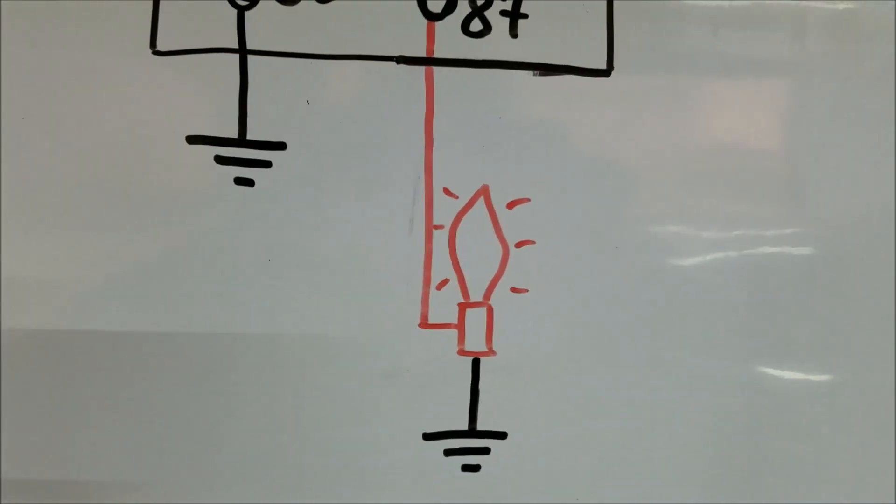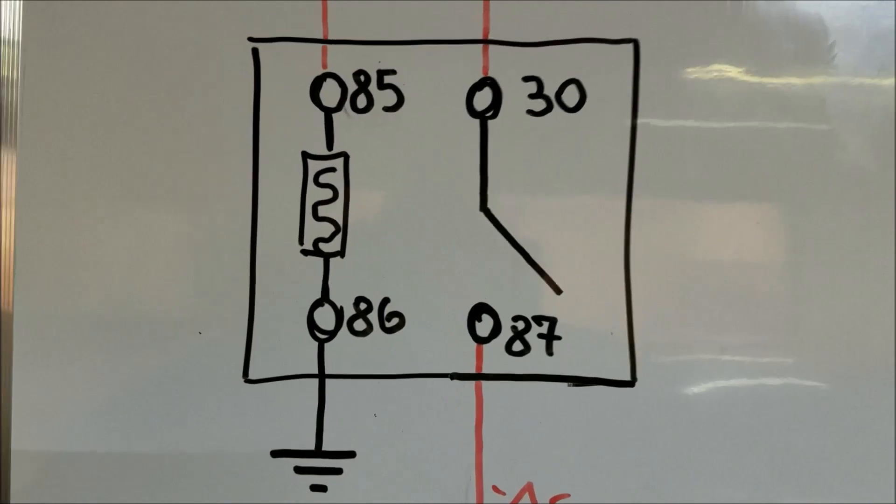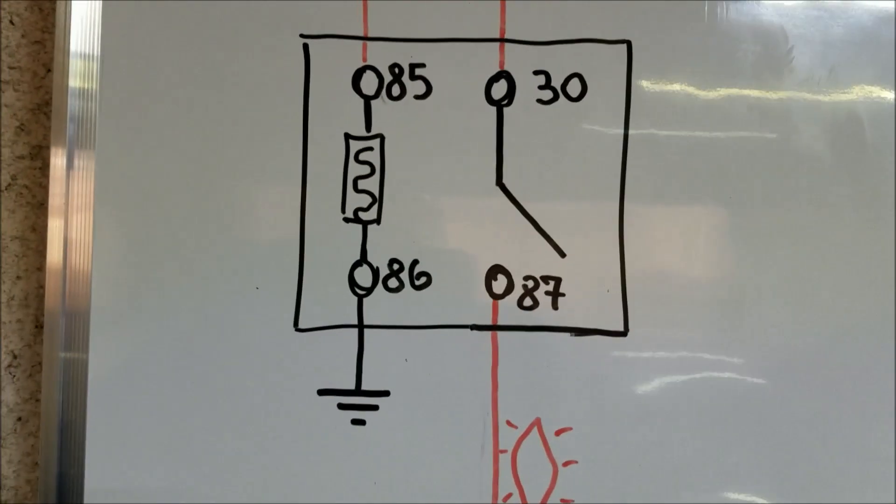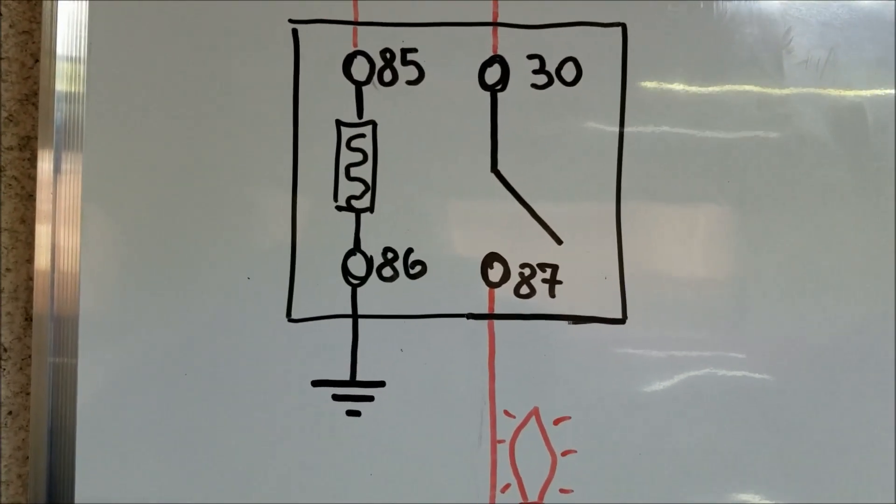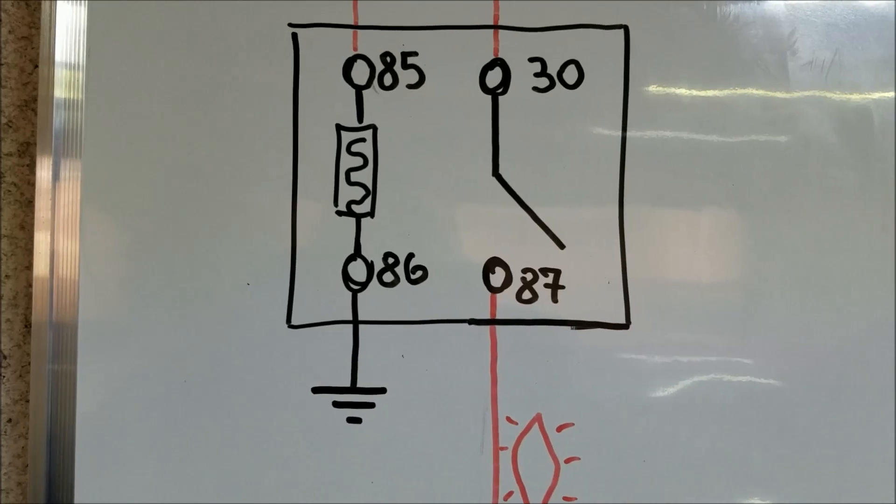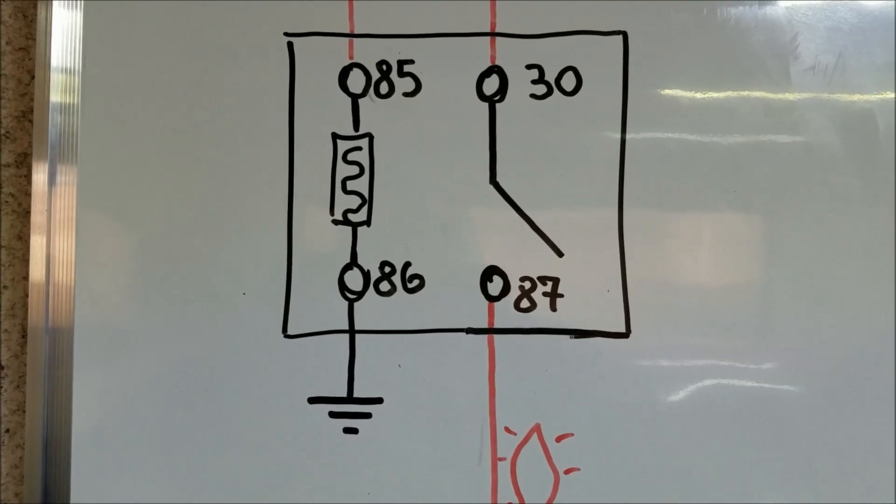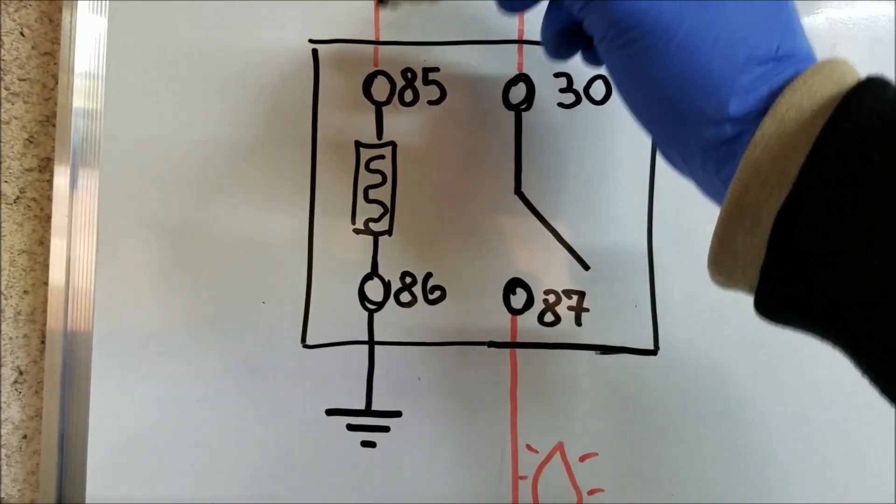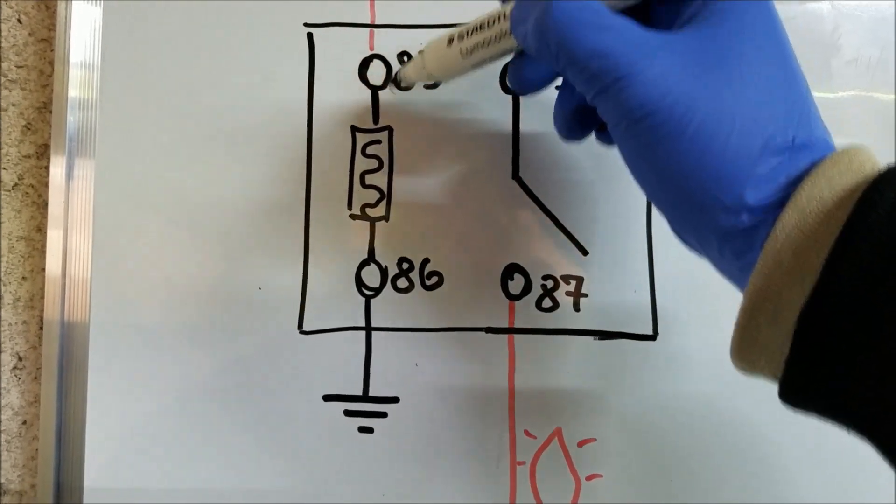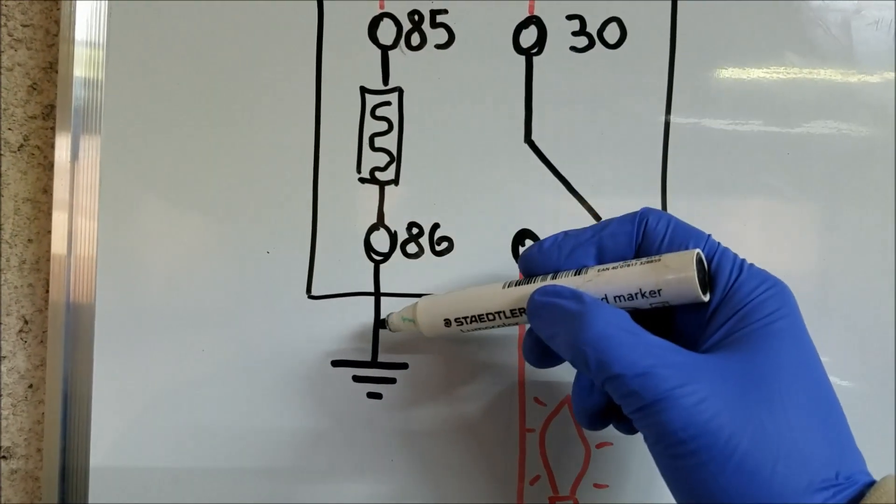Now that we went over the basic operation of a relay, we're going to go over the numbers and what they actually represent. Pin number 85 is always going to be our positive to our electromagnet, while pin number 86 is going to be our ground.